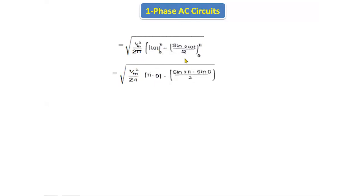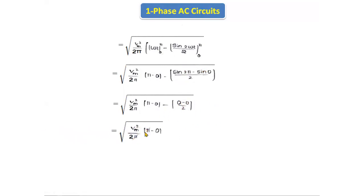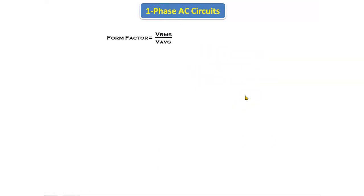Applying the limits: (π − 0) minus [sin(2π) − sin(0)]/2. Since sin(2π) = 0 and sin(0) = 0, the second term is 0. We get Vm²/2π × π, and the π cancels, leaving Vm²/2 under the square root. Taking the square root gives V_rms = Vm/√2.